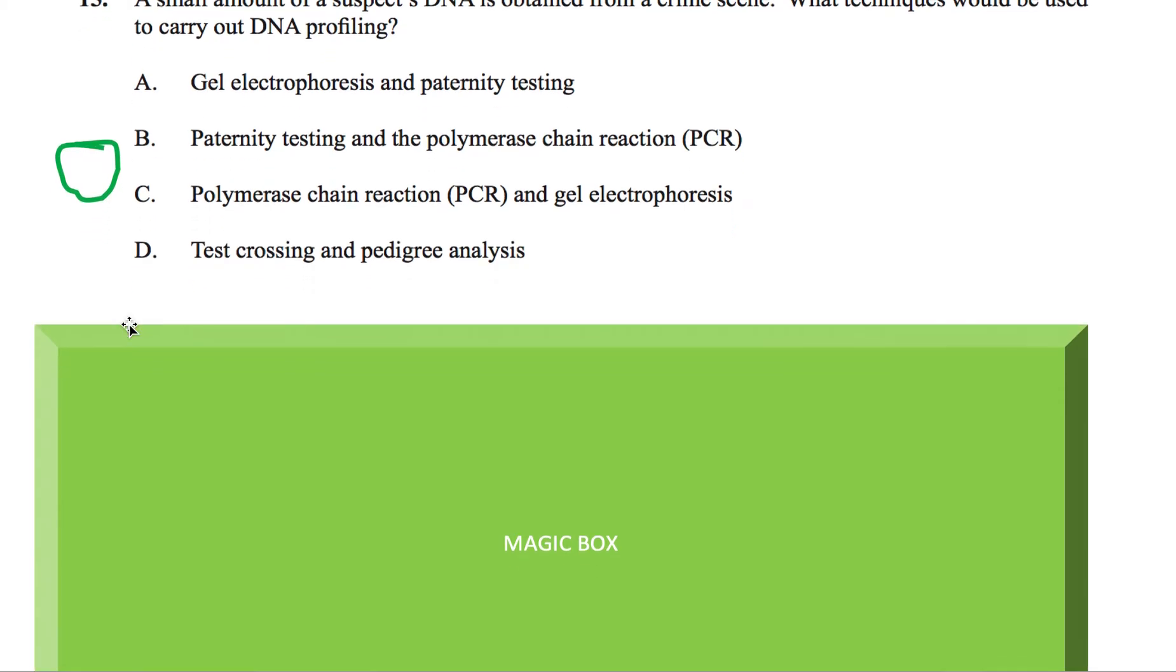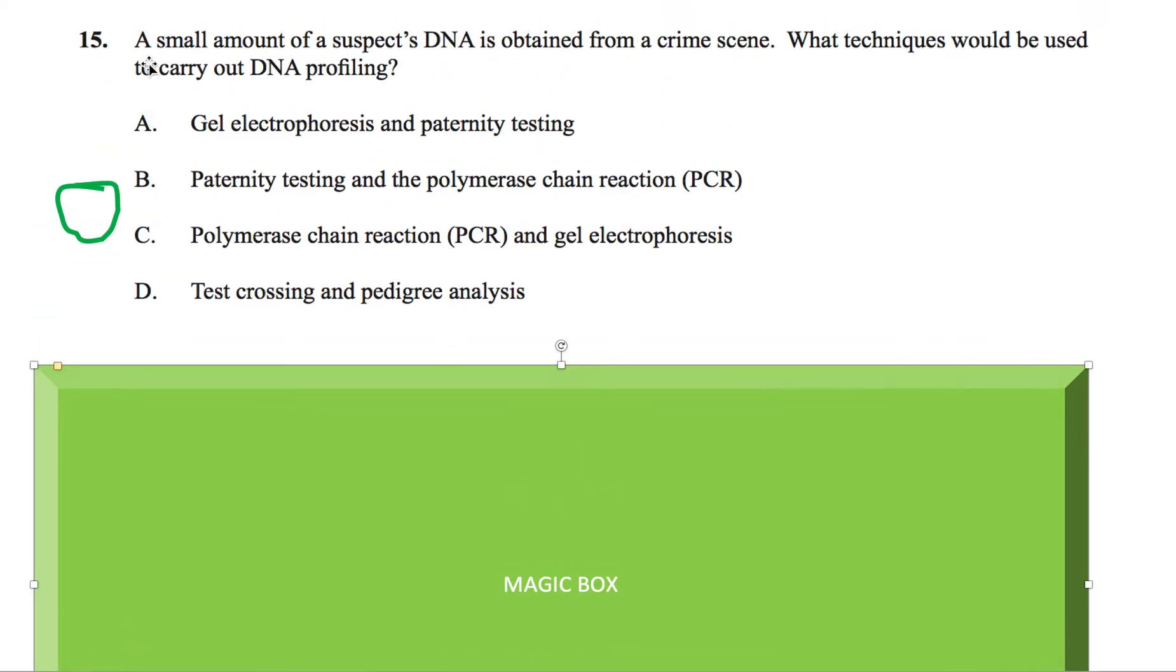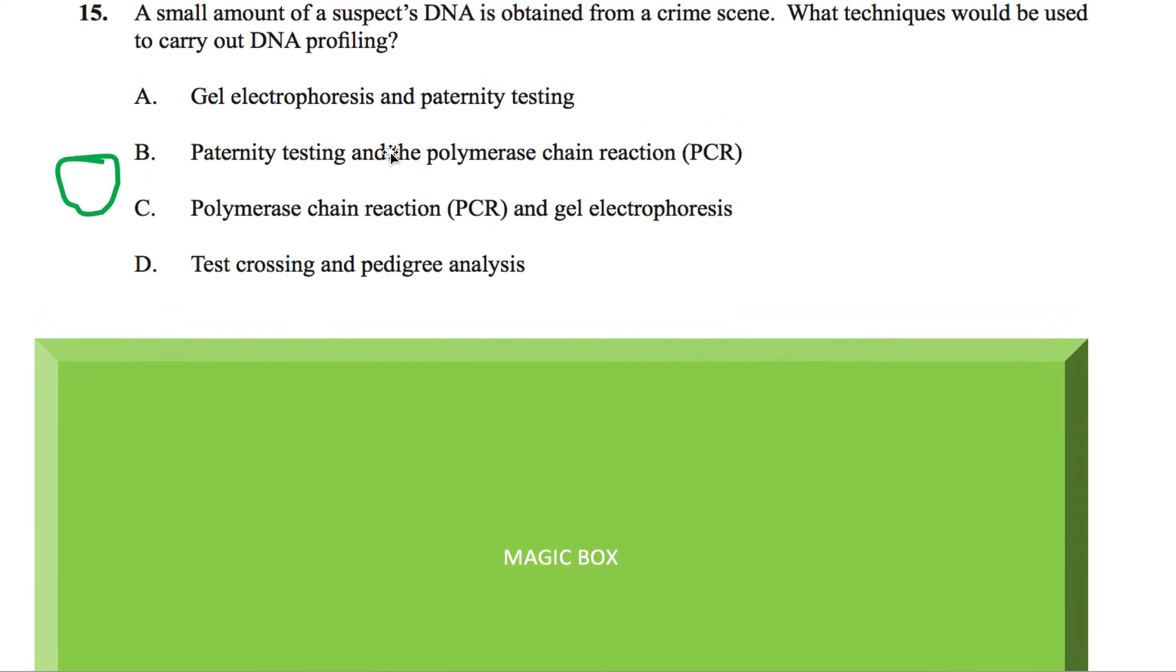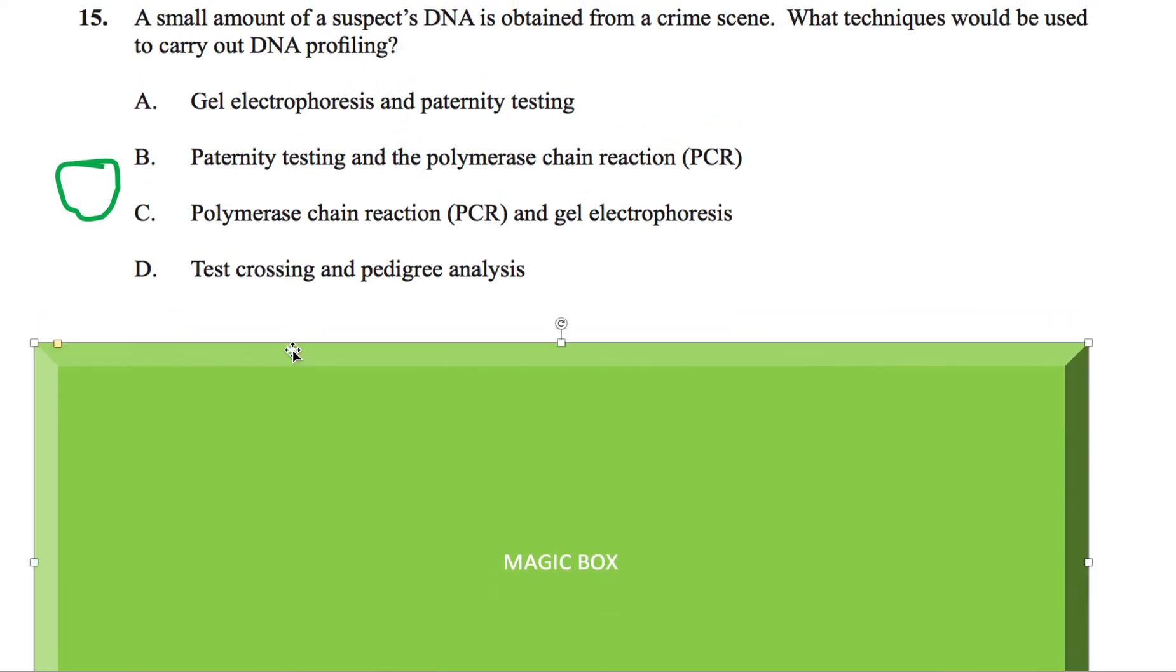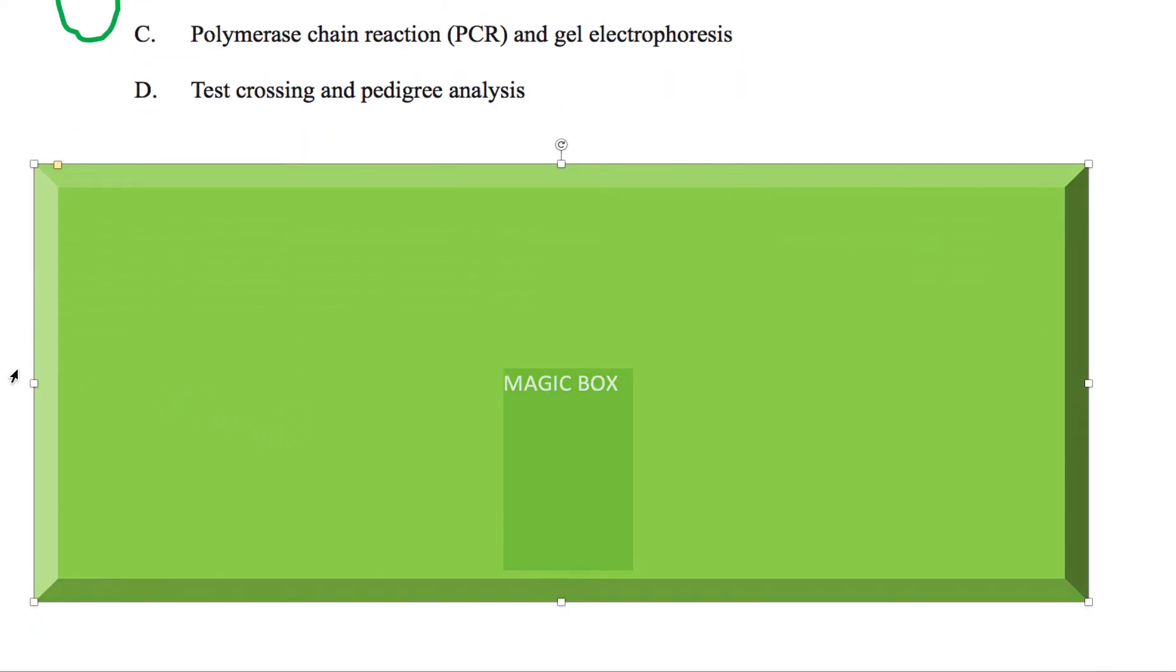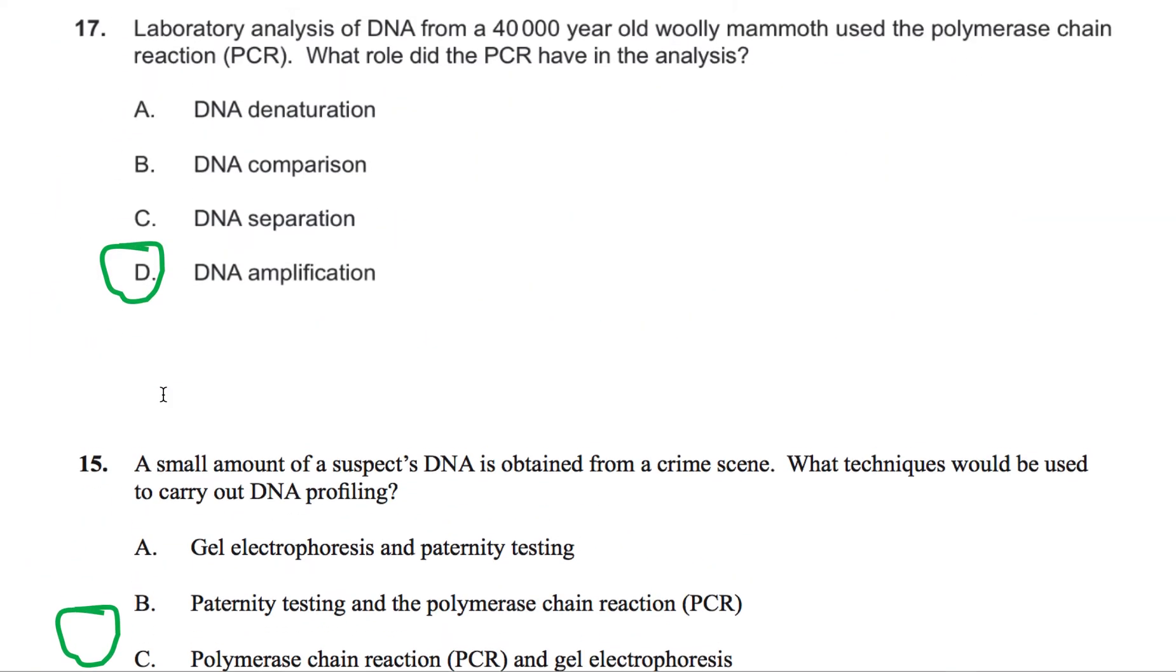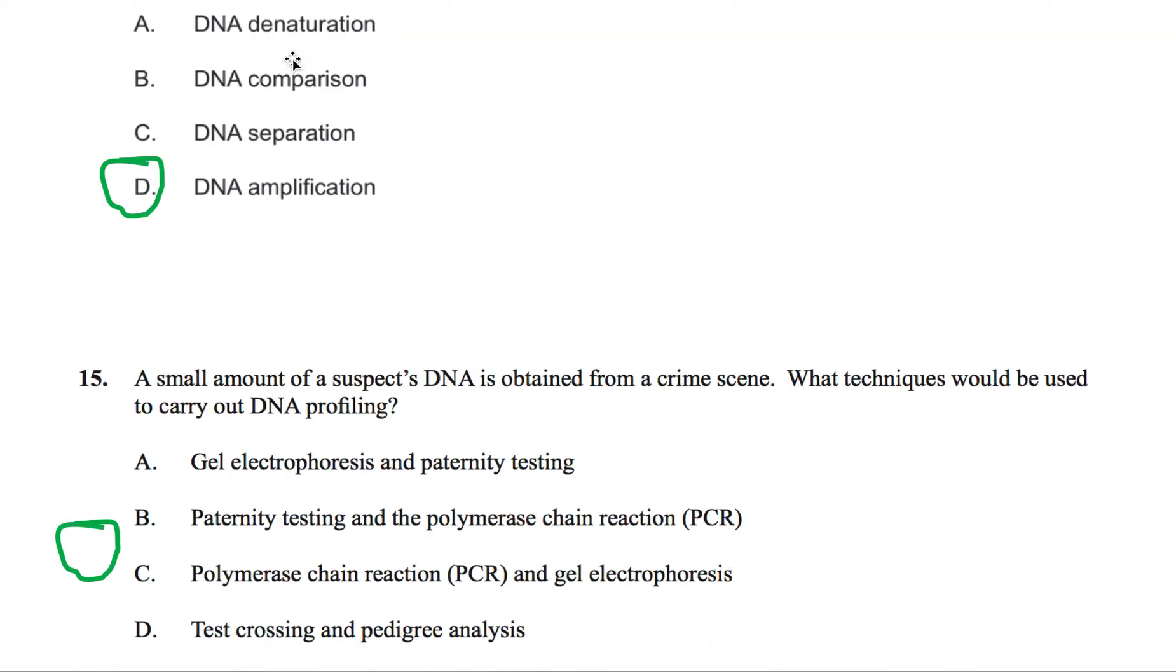So to do a DNA profile, you need to do two things. So first, we notice the question is stating a small amount of a suspect's DNA. This means that there is not enough DNA. So the first thing you do, you need to do to make a DNA profile, is make more DNA. And that's exactly what we mentioned in this question. DNA amplification, making more DNA. So you need to do a PCR first. That's the first thing you've got to do.